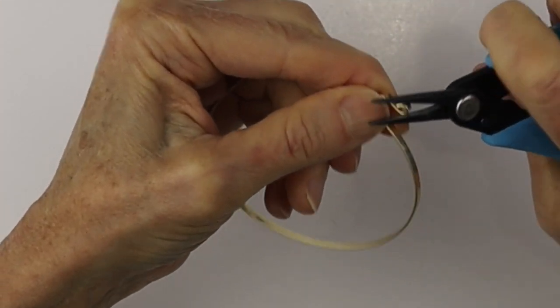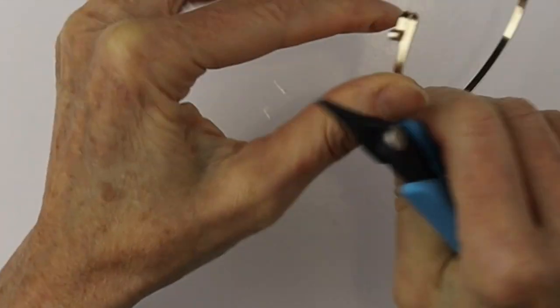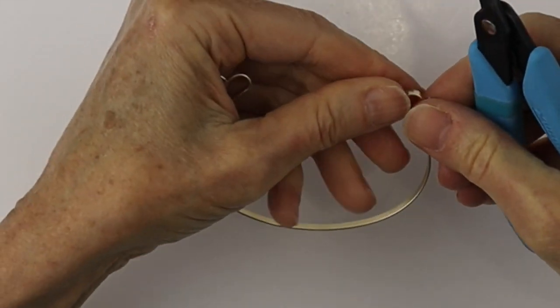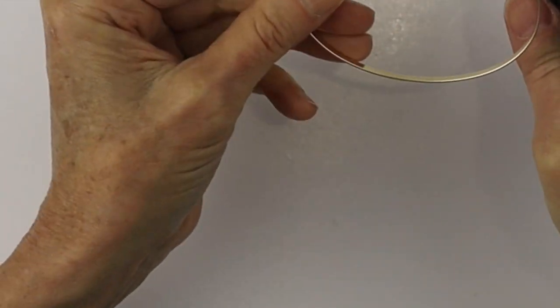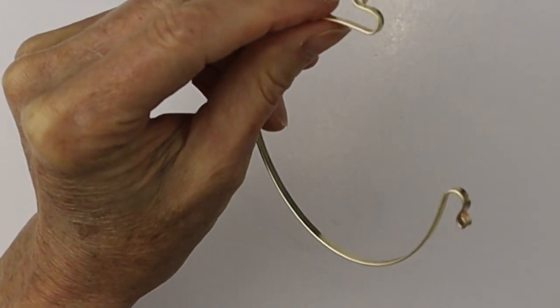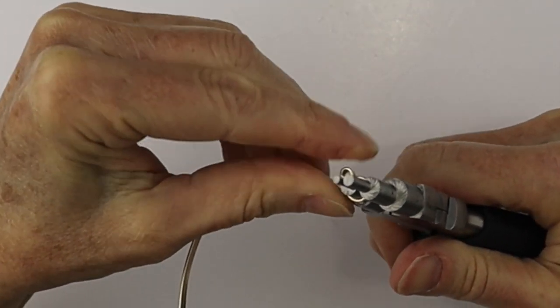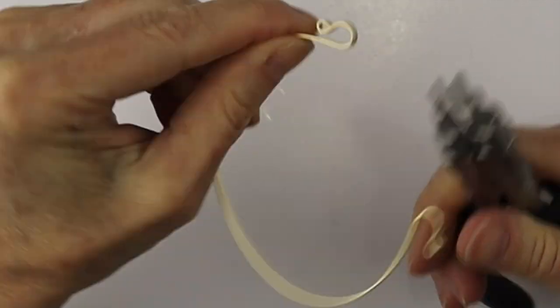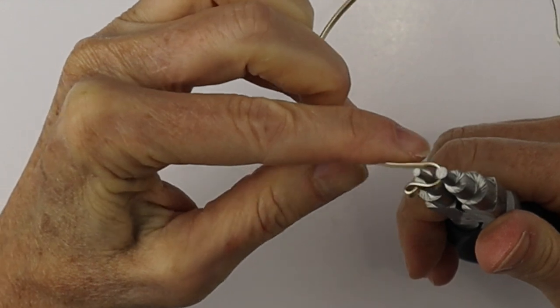Then we can close the loop with our flat pliers. These are the Xuron tweezer nose pliers. They're very handy for getting into little spaces. Just close up that gap. Once we have that closed, we're just going to push one of the little loops closed.